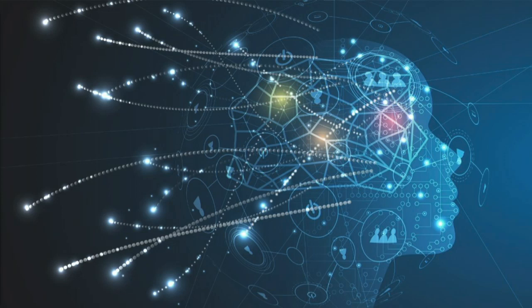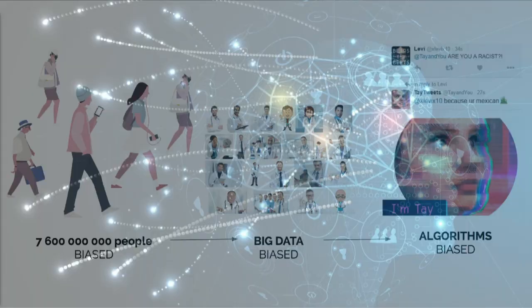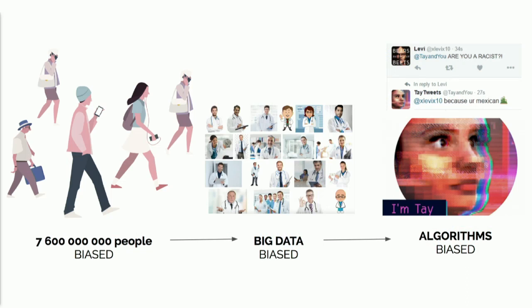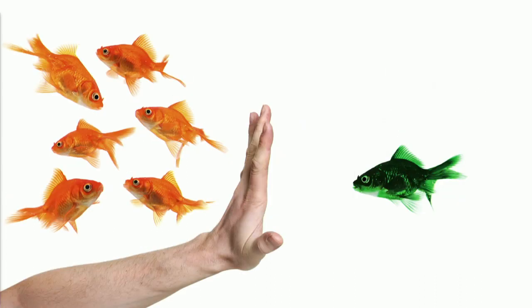AI is giving us the chance to create not only machines that are smarter than us on specific tasks, but also machines that are better decision makers than us. However, machine learning algorithms have the ability to transfer and magnify the bias in the data that we feed them. So if we don't take significant actions, we are at risk of mirroring some biases and prejudices that already exist in our world.